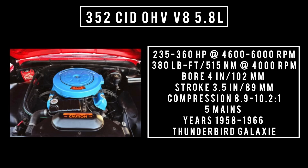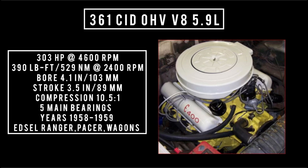Also introduced in 1958: the 361 cubic inch displacement overhead valve V8, 5.9 liters. Good for 303 horsepower at 4,600 RPM, 390 pound-feet or 529 newton meters at 2,400 RPM, with a bore of 4.1 inches and a stroke of 3.5 inches. Compression was 10.5 to 1, five main bearings, four-venturi. Used between 1958 and 1959, mostly found in the Edsel Ranger, Pacer, and Villager. In 1959, this engine went by the name Super Express V8.